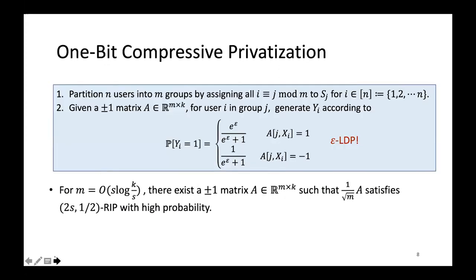The first scheme I will introduce is called the one-bit compressive privatization. We will use a matrix A for privatization, where the entries of A are 1 or minus 1. Users will be first partitioned into m groups. And for user i in group j, y_j is generated according to A_j x_i by this distribution. Apparently, this privatization scheme satisfies epsilon LDP. Since y is 1 or 0, it only needs one bit to send y. By standard theory from compressive sensing, for m equals O(s log(k/s)), there exists an RIP matrix A with 1 or minus 1 as its entries. And we will use this matrix in one-bit compressive privatization scheme.